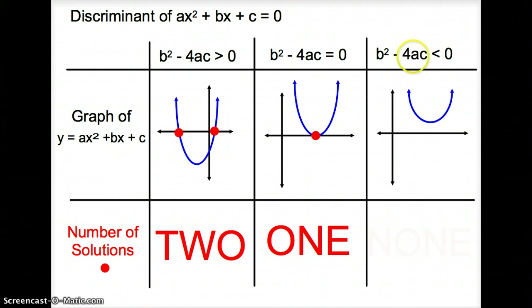If it is less than zero, the discriminant is less than zero, the graph will look something like this. How many times does our graph touch the x-axis? It doesn't at all. So we have no solutions. We have none.